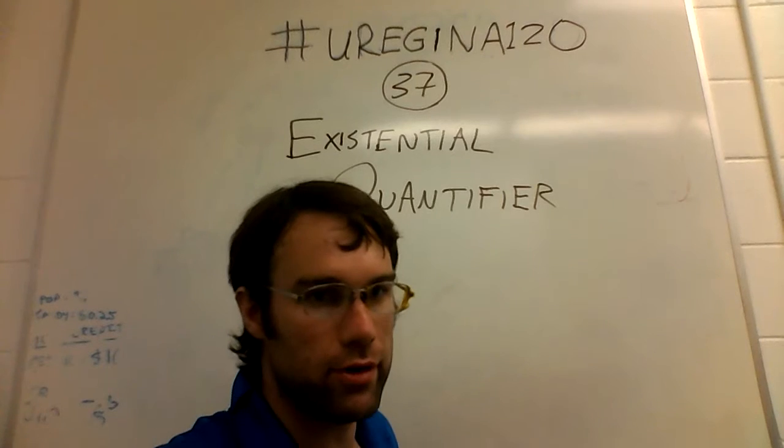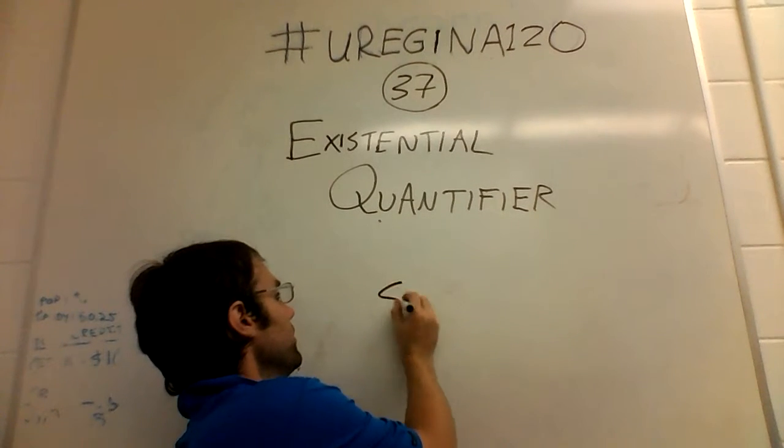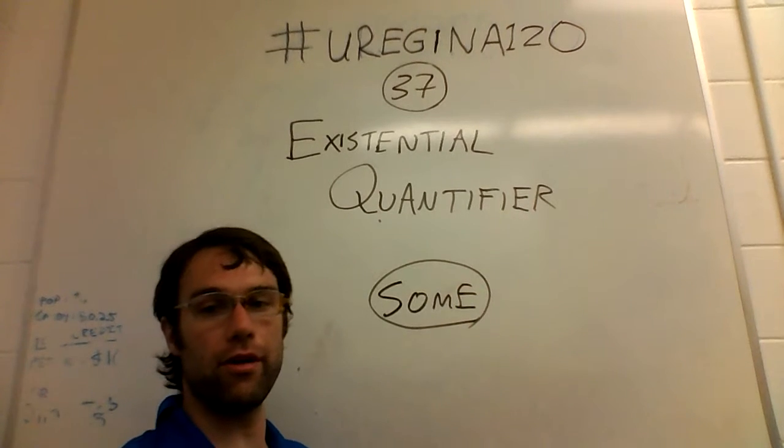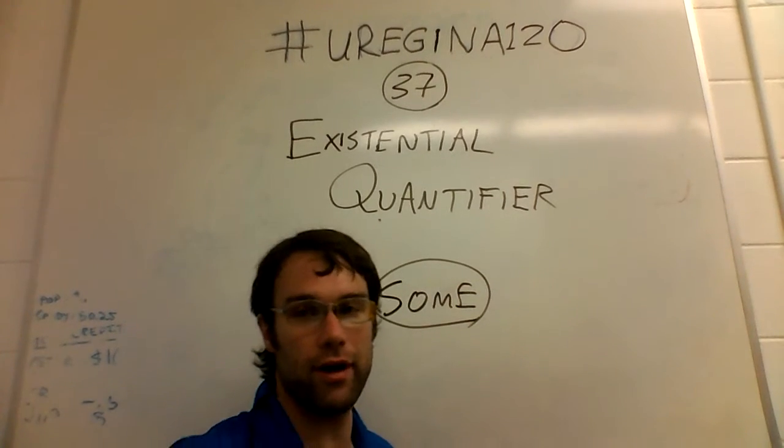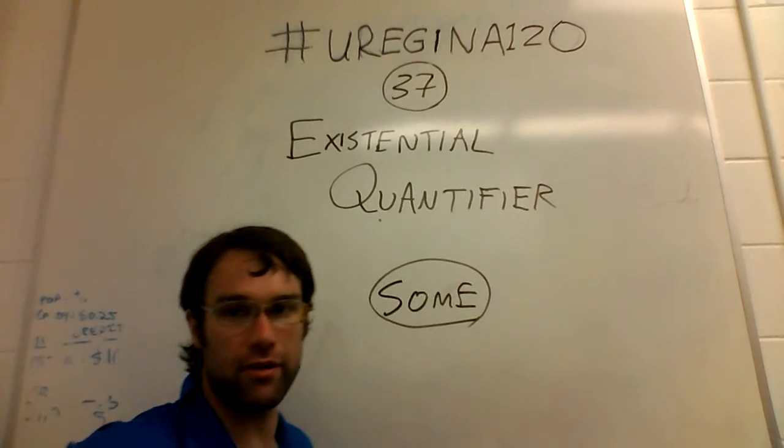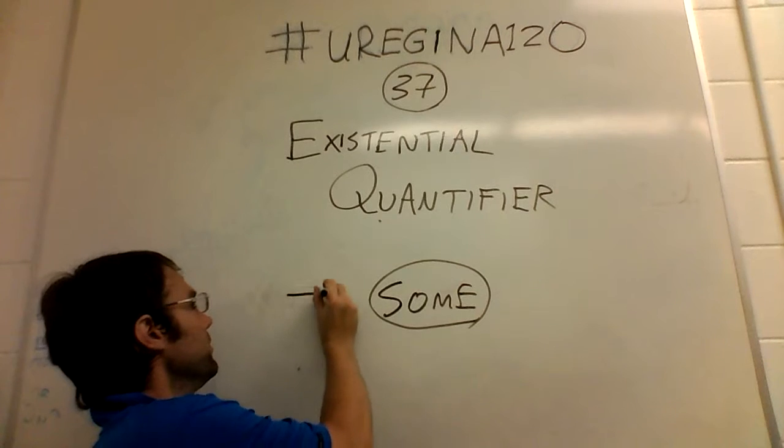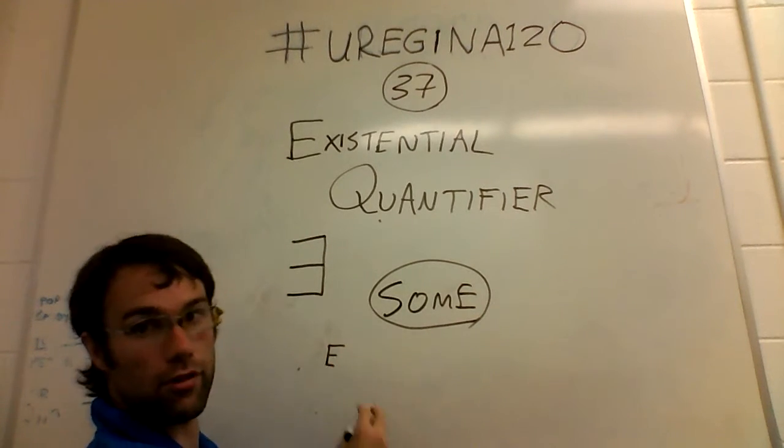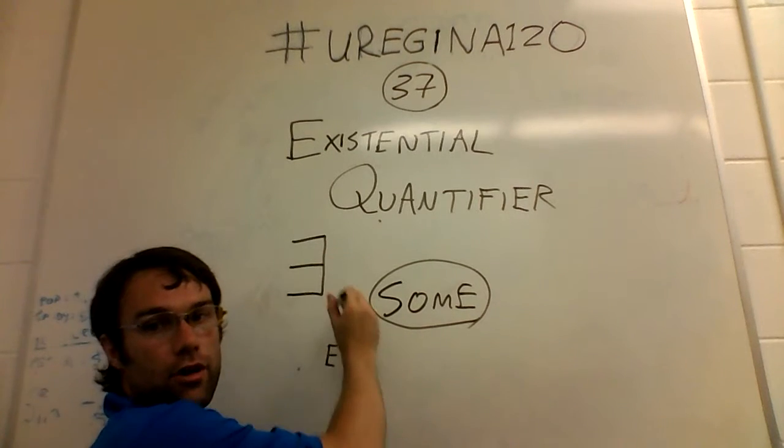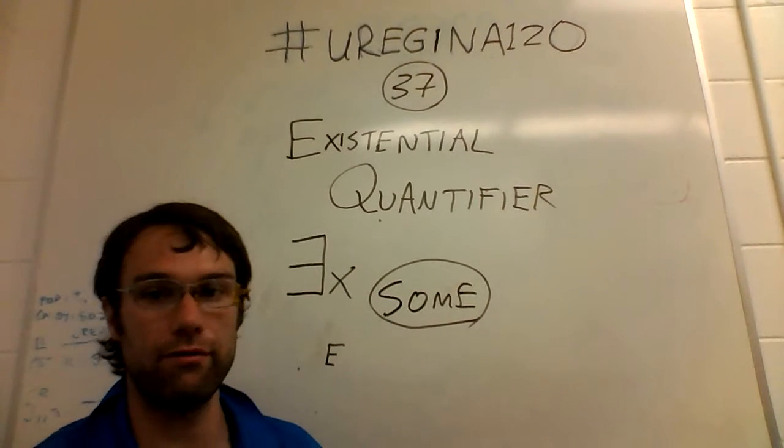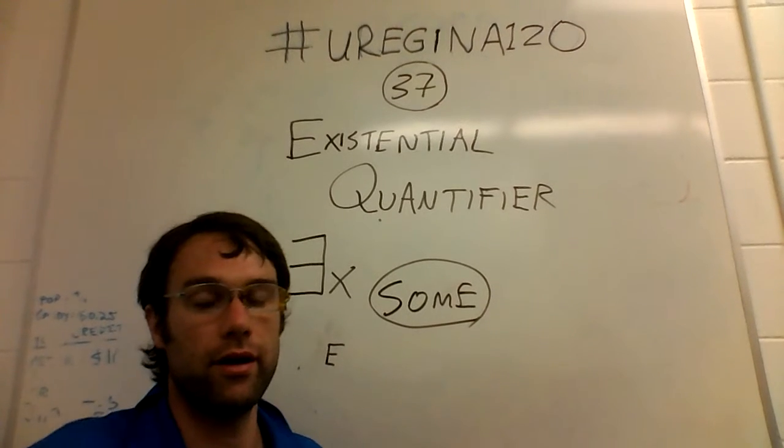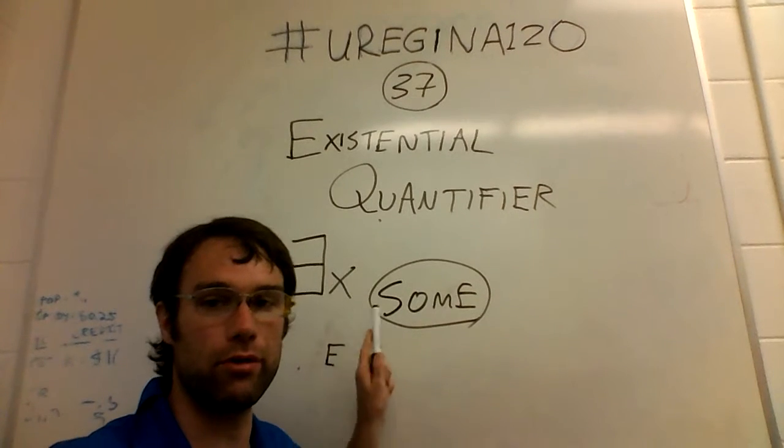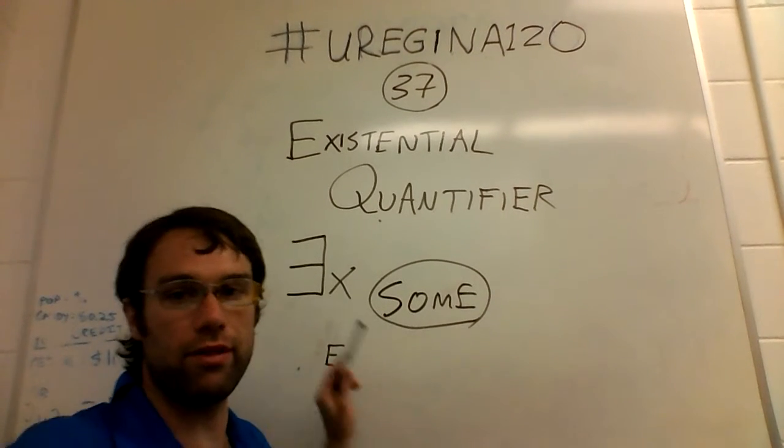Today, this one is going to be about something. The symbol involved is going to be similar to the upside down A, a backwards E. This is our backwards E, usually followed by a variable of some kind, to specify what is existing, or what we're talking about, or what is being referred to.